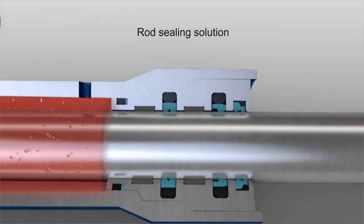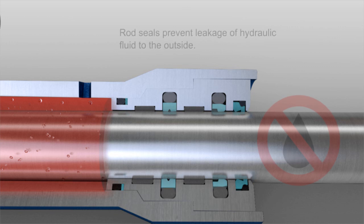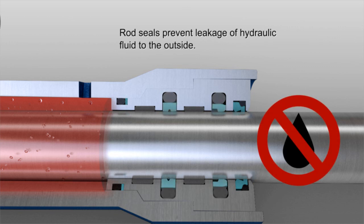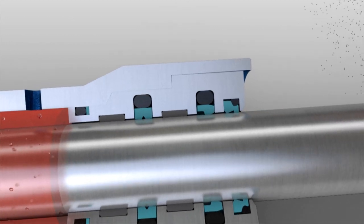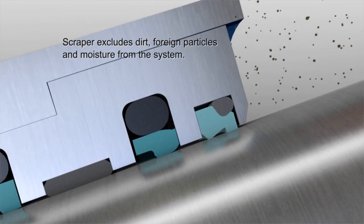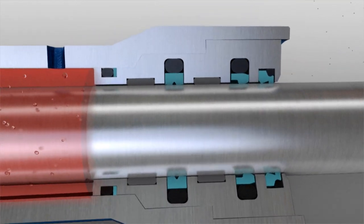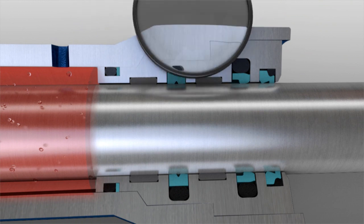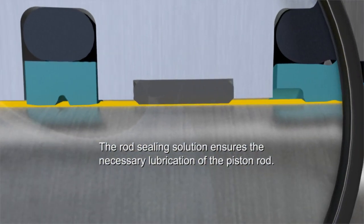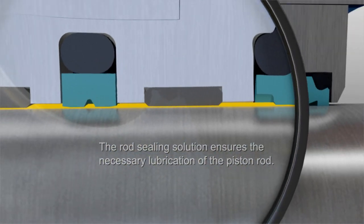The rod sealing solution prevents leakage of hydraulic fluid from the cylinder to the outside. A scraper excludes dirt, foreign particles, and moisture from the system. The rod seal also ensures there is sufficient lubrication for the piston rod.